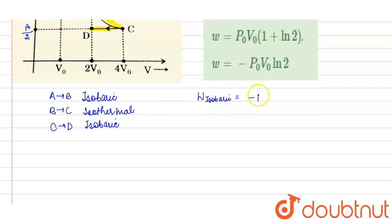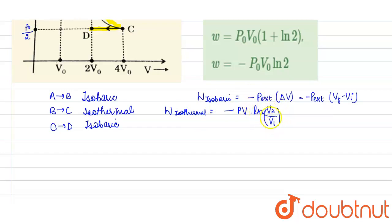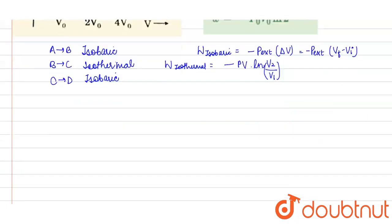Work done for an isobaric process can be written as minus p_external into delta V, where delta V is V_final minus V_initial. Work done for an isothermal process can be written as minus pV into natural log of V2 upon V1, where V2 upon V1 means final volume upon initial volume.